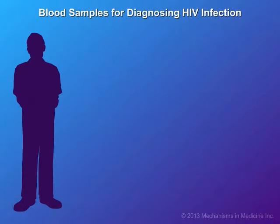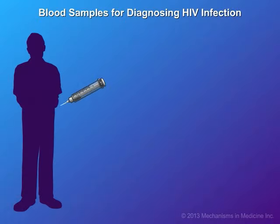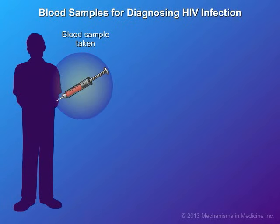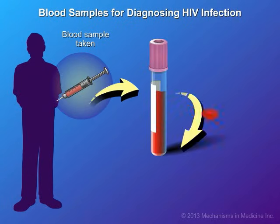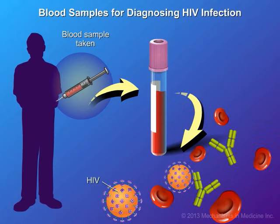To diagnose whether you have been infected with HIV, a blood sample will have to be taken for testing. Tests performed on your blood sample will look for the virus itself or specific markers called antibodies that indicate that the virus is present.